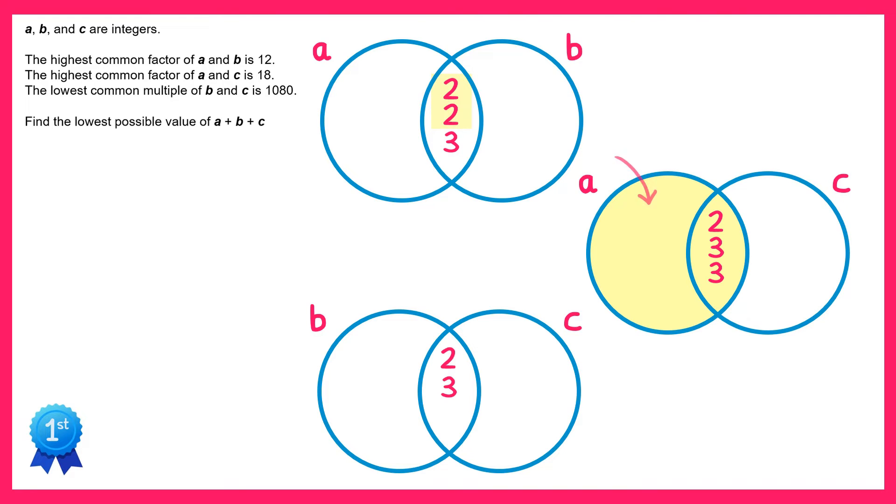We could either put it in the left section here or in the intersection here. Now if we put it in the intersection, this would increase our highest common factor, so it can't actually go there, therefore it must go in this left side here.